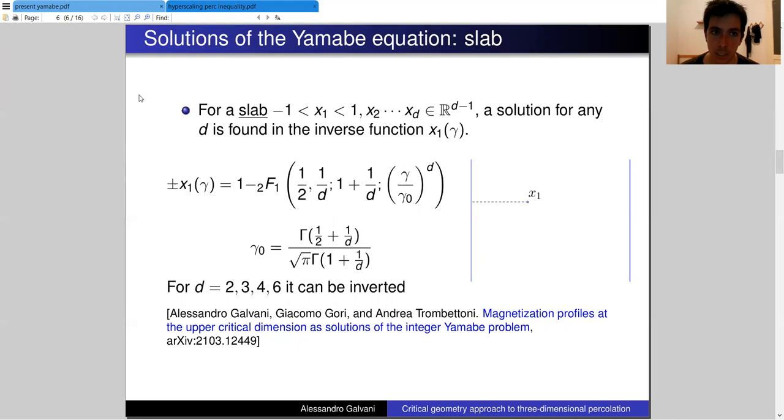A slightly more interesting example, which is the one that we actually will be using, is that of a slab. Here, we can find a solution in any dimension, but we can only express it through its inverse function. So we cannot have gamma of x1, we can only obtain x1 as a function of gamma.